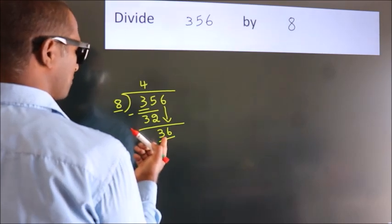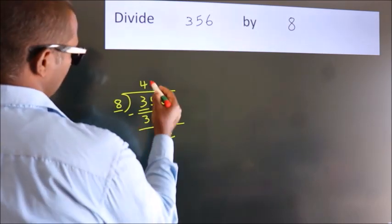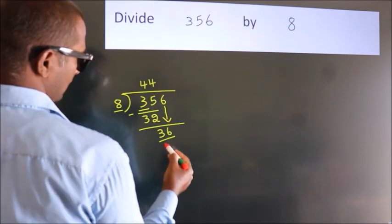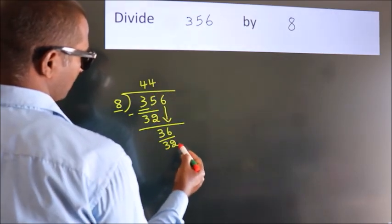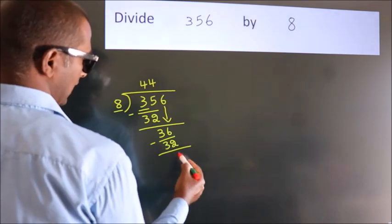A number close to 36 in the 8 table is 8 times 4 is 32. Now we subtract. We get 4.